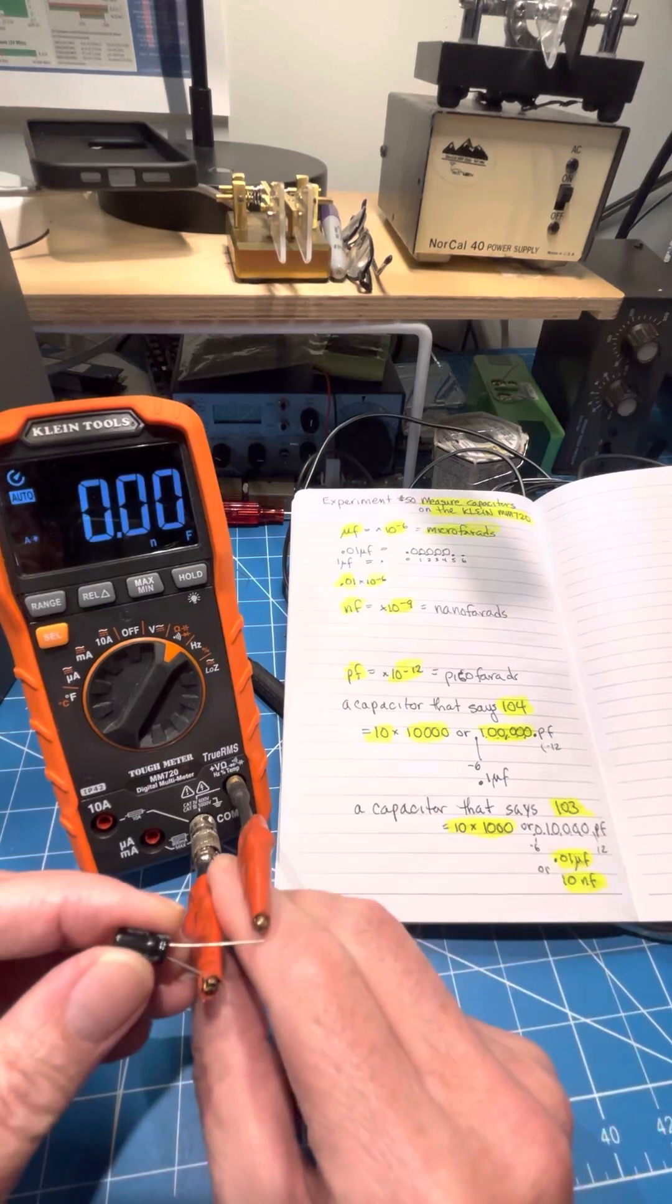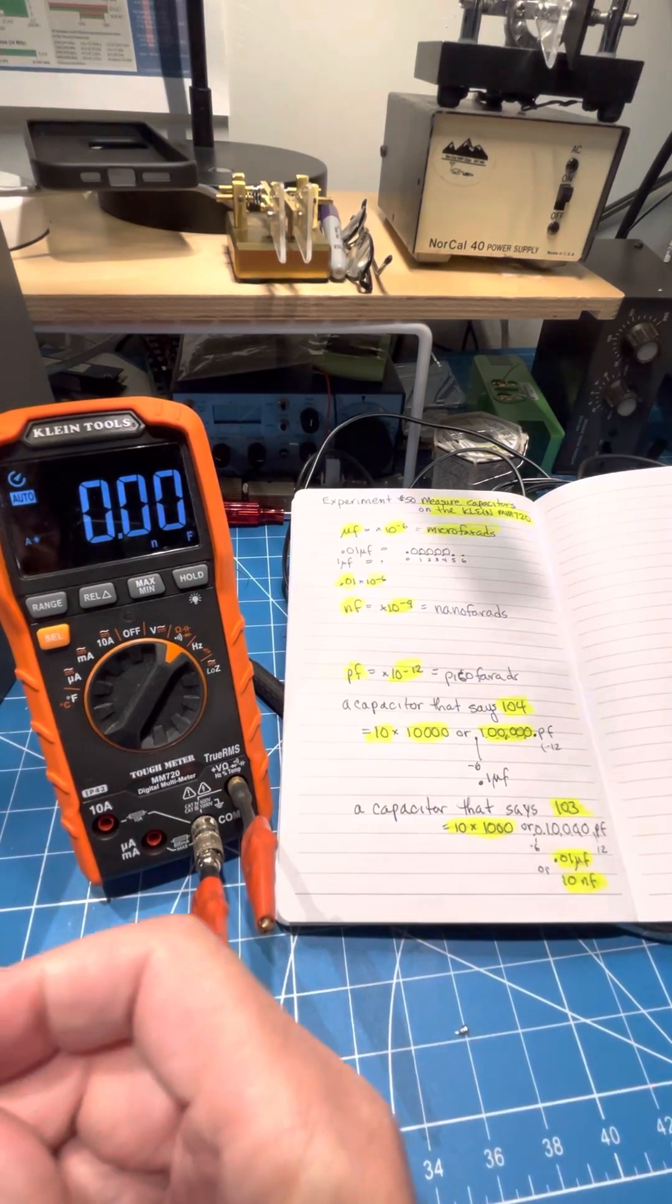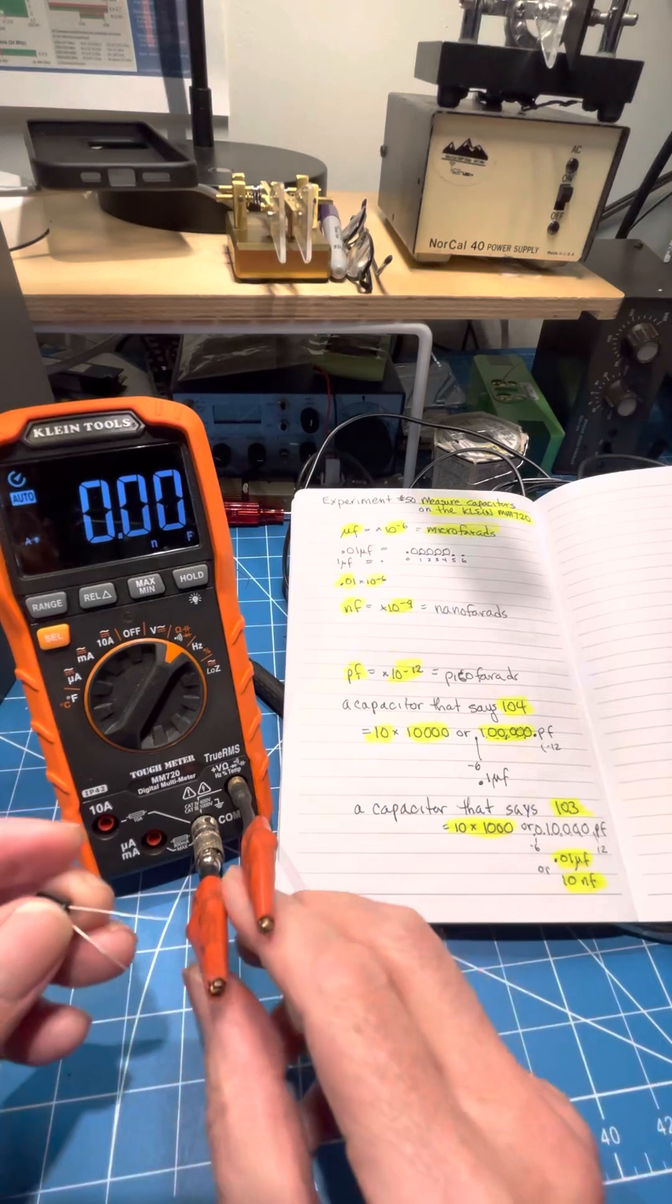And it's certainly within its tolerance of probably 5 or 10%. Here's another one. We'll put the minus down here.